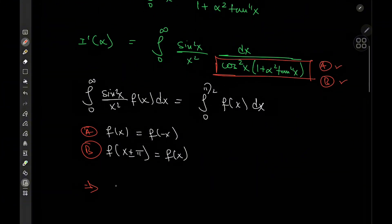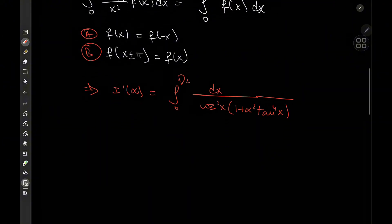So all of this implies that the derivative of I with respect to alpha is now just the integral from zero to pi over two of dx over cosine squared x times one plus alpha squared times tangent to the fourth power of x. And that looks slightly better. I mean, it still looks quite hostile, if you ask me. But perhaps a transformation or two could do the trick.